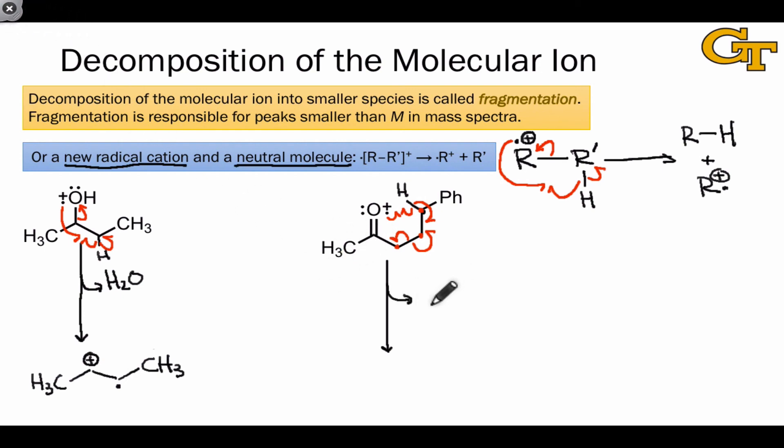The alkene is a neutral fragment that we don't detect directly, but we can see as a difference between peaks, and the new radical cation, as we've drawn it here, has radical character on one of the alpha carbons, and cationic character at the oxygen, although there are multiple resonance forms that we can draw for this molecule.